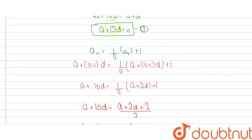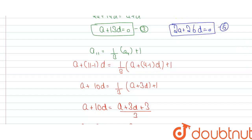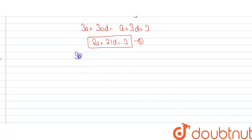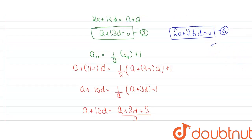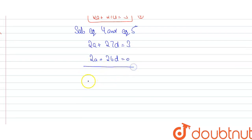Equation three is a + 13d = 0. Multiplying both sides by 2 gives 2a + 26d = 0, which is equation five. Subtracting equation five from equation four: (2a + 27d) minus (2a + 26d) = 3 minus 0, so d = 3.